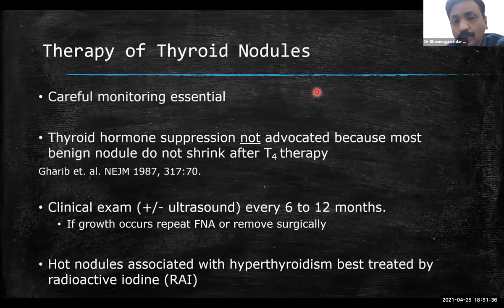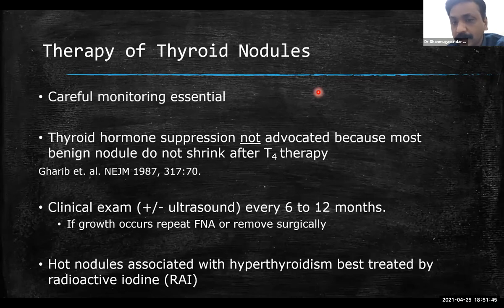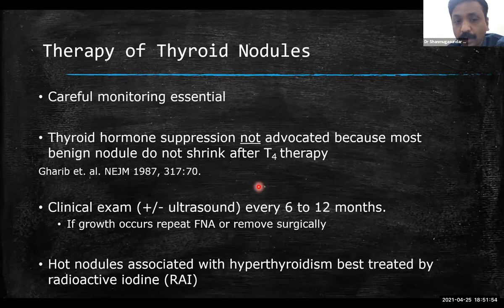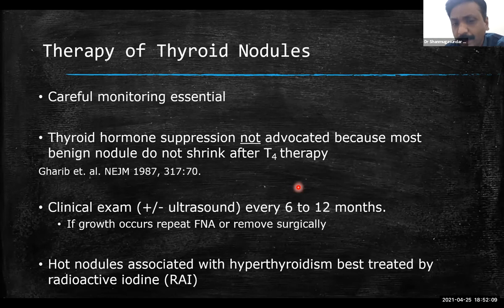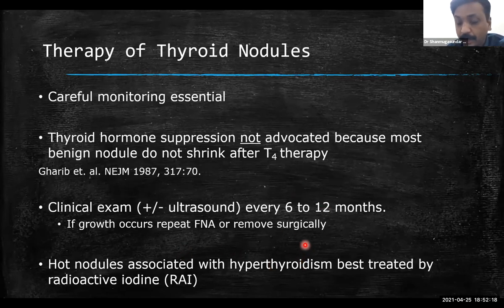Therapy of thyroid nodules is most commonly monitoring. If no evidence of malignancy, just monitor. Surgery is indicated if the nodule is very large causing local symptoms, or if TIRADS 3 or more, or Bethesda 3 or more. Don't start thyroxine therapy for thyroid nodules. Observation duration depends on ultrasound and FNAC findings — ranging from 6 months to 24 months. If hot nodule, go for radioactive iodine therapy.